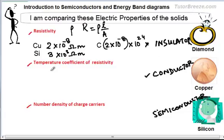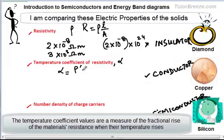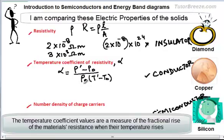Now comparing the temperature coefficient of resistivity — let's first define it. It is denoted by alpha, and alpha = (rho' − rho₀) / (rho₀ × (T' − T₀)), where T₀ is a reference temperature and rho₀ is the resistivity at that reference temperature.